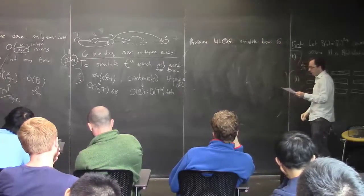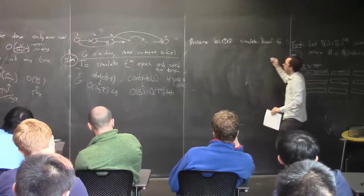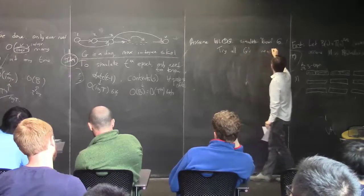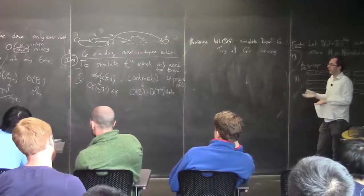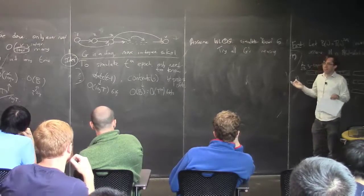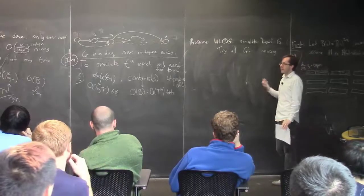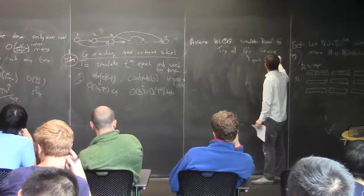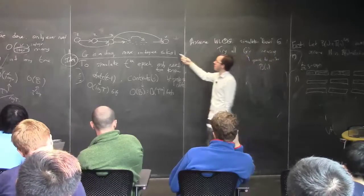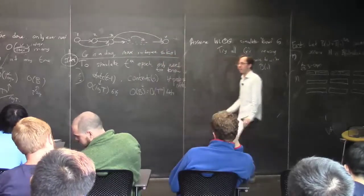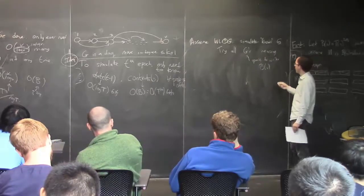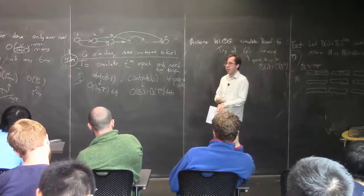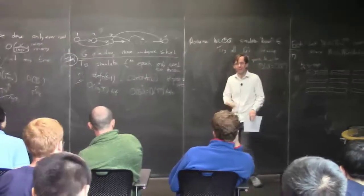What is the space to write down a G? It's Õ(V) — there are V vertices and you need to say for each one its constant number of predecessors, using log V bits per vertex name. This is O(T^(1/3)), which is much less than the overall space we're shooting for. So we can just have a 'try all graphs' tape that constantly cycles through.